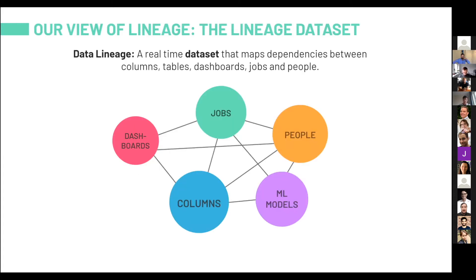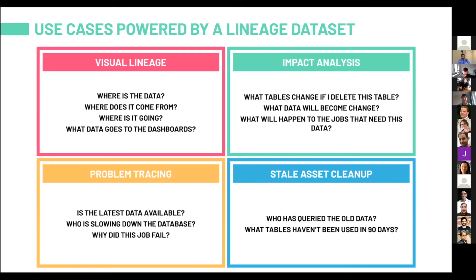For us, we see data lineage as a data set rather than a feature — a data set that maps between the entities that consume and create data. That allows us to ask and answer some really important and interesting questions. With visual lineage, we can answer: where is the data going? Where is the data coming from? What data flows to a dashboard?